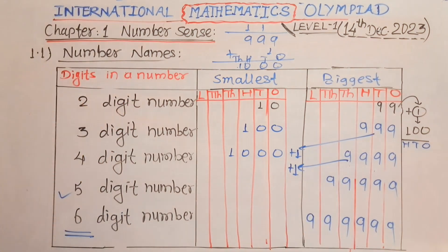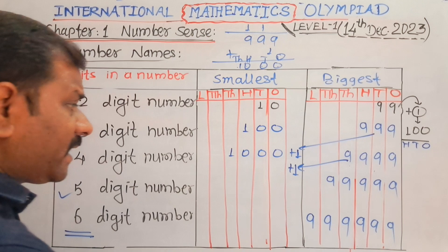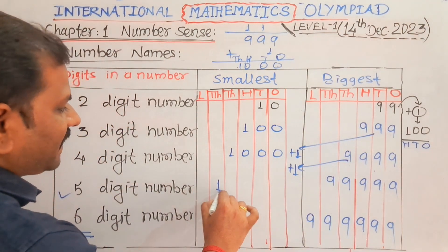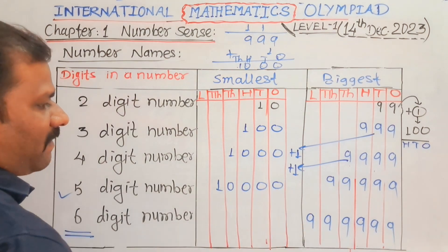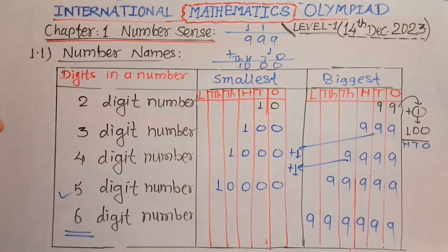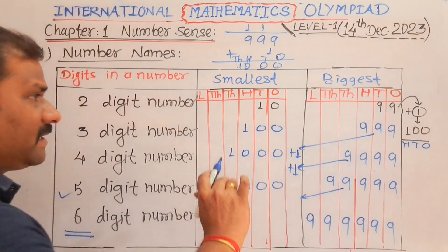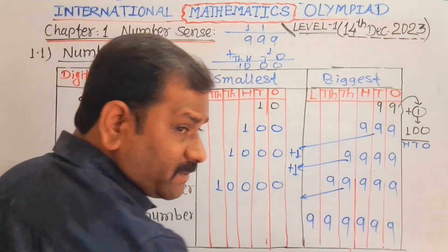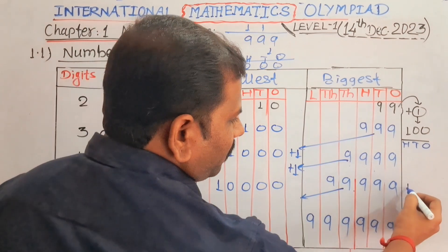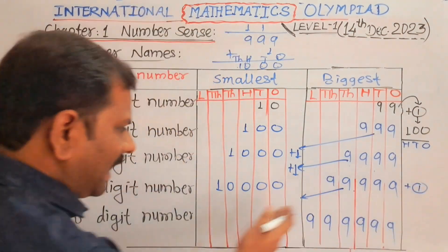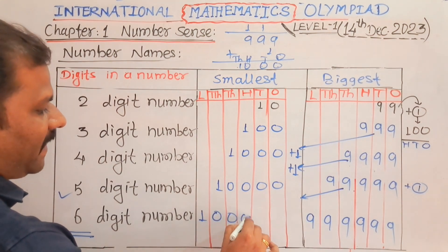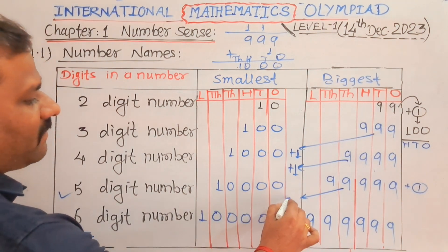When we add 1 to 9,999, you will get the smallest 5-digit number — and absolutely you are correct, it is 10,000. The smallest 5-digit number is 10,000. In the same manner, when you add 1 to the biggest 5-digit number 99,999, then the answer is nothing but 1 lakh. That answer is nothing but 1 lakh.